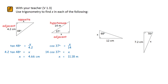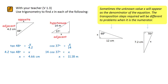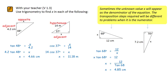Sometimes the unknown value will occur in the denominator of the equation. This next example involves the opposite and adjacent sides, making it a tan question. The tan of 68 equals opposite 12 over adjacent x. To make x the subject, first multiply both sides by x to get x times tan of 68 equals 12. Then divide both sides by tan of 68, giving x equal to 12 divided by tan of 68, which evaluates to 4.85 cm. Note that the steps of transposition here are a little different to the first questions.